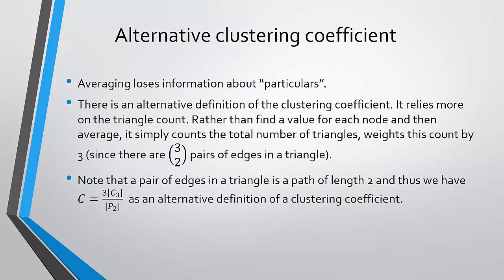There's an alternative definition for the clustering coefficient of the network. The reason we want an alternative definition is because oftentimes you lose information about the distribution when you take a straight average. So this alternative definition does not use the average. Instead, it defines the clustering coefficient of the network as the ratio of 3 times the number of triangles to the number of paths of length 2 — that is, 3 times the cardinality of C sub 3 over the total number of paths of length 2.